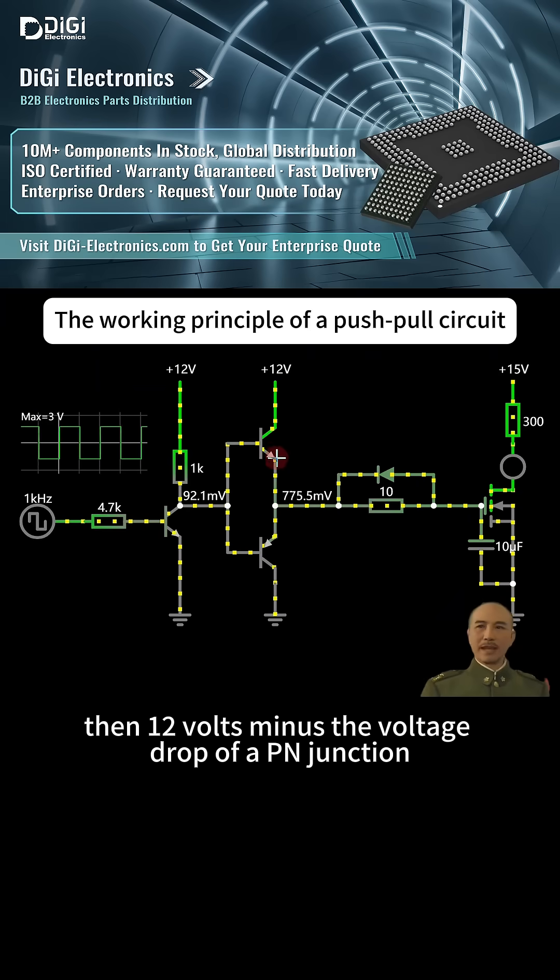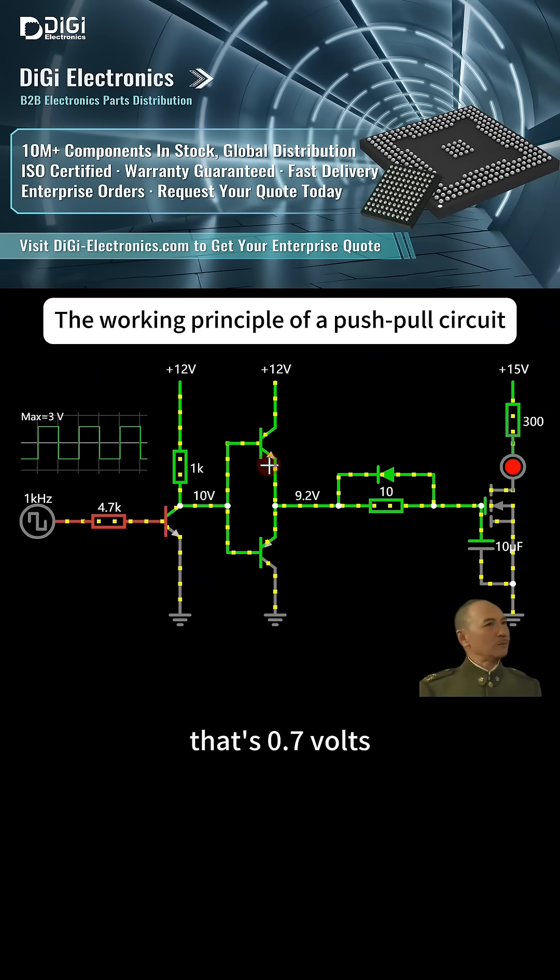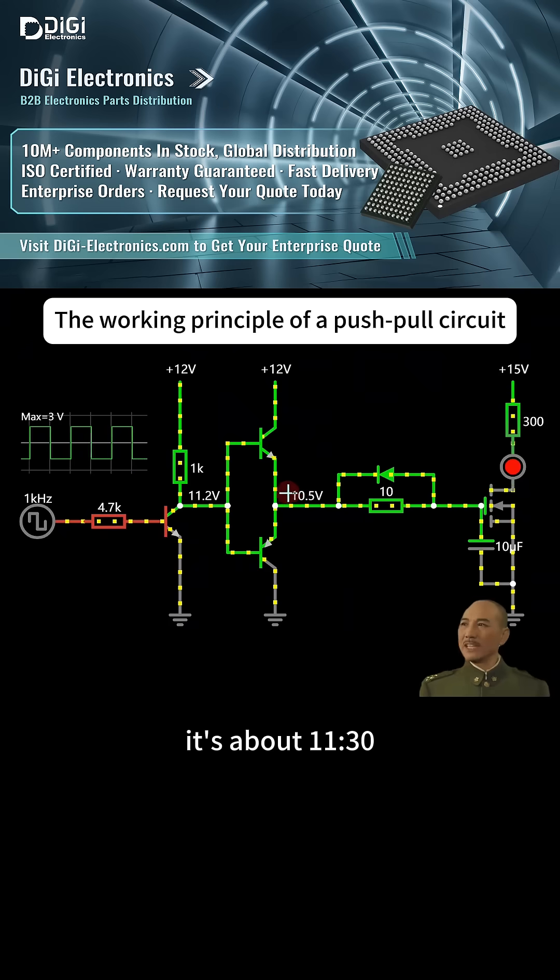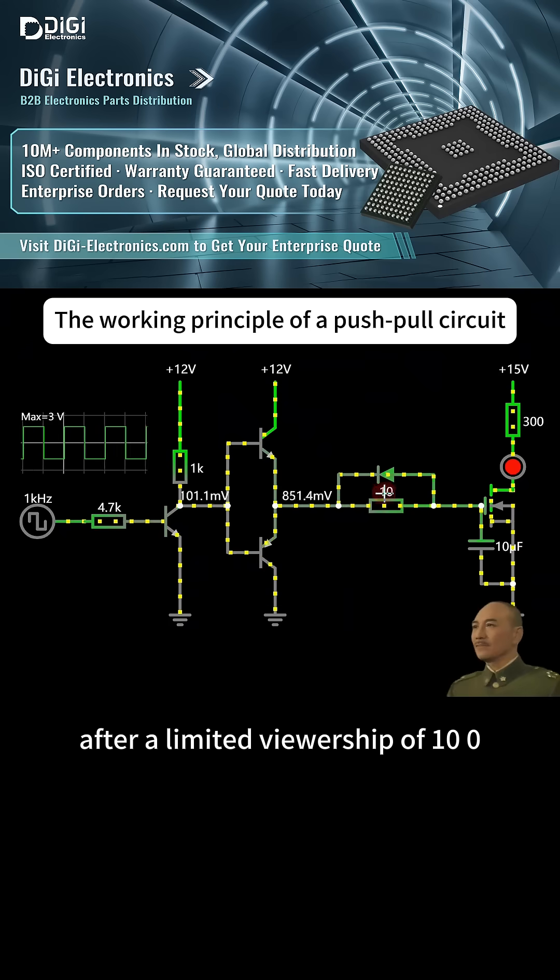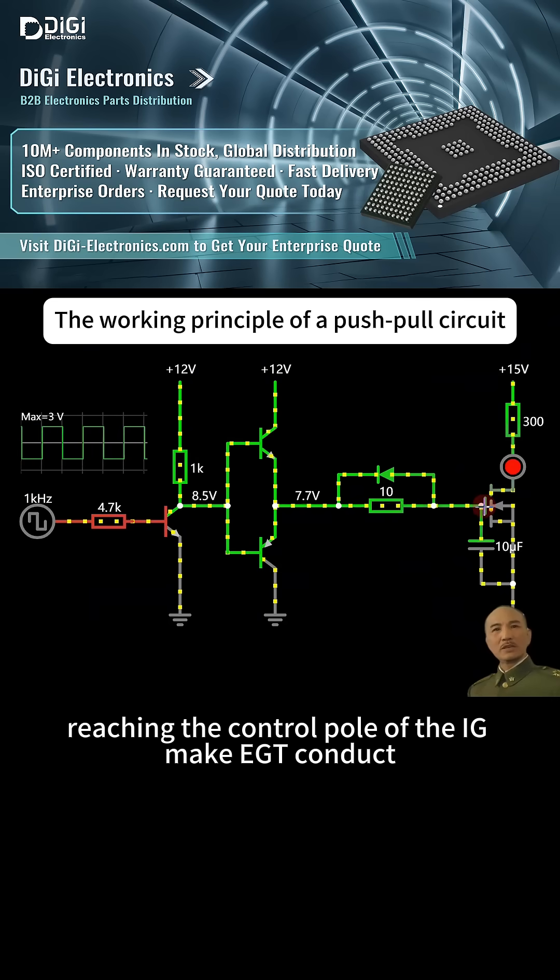Then 12V minus the voltage drop of a PN junction, that's 0.7V, it's about 11.3V. After current-limiting of 10 ohms, reaching the control pole of the IGBT, makes IGBT conduct.